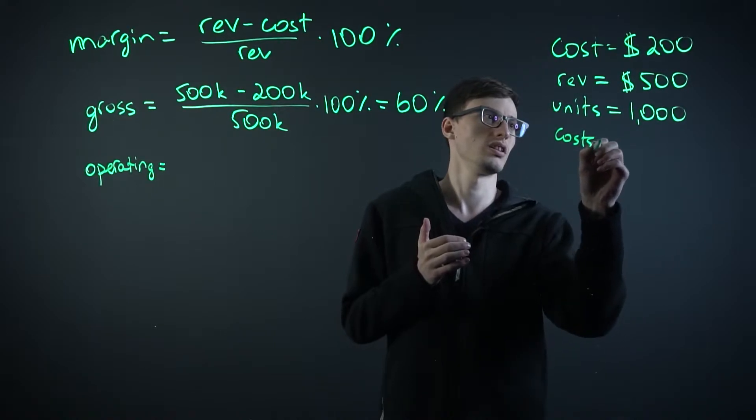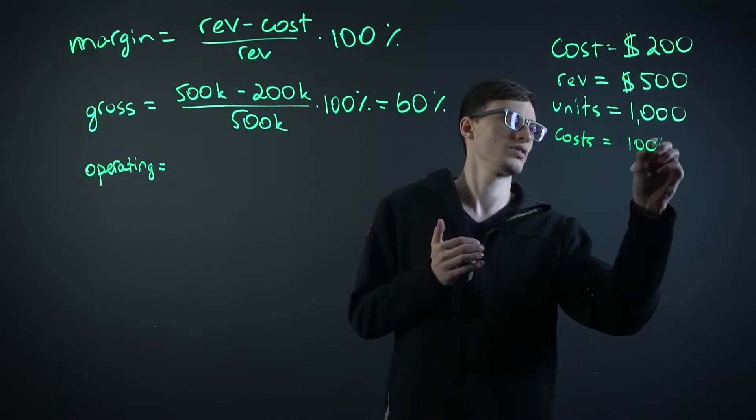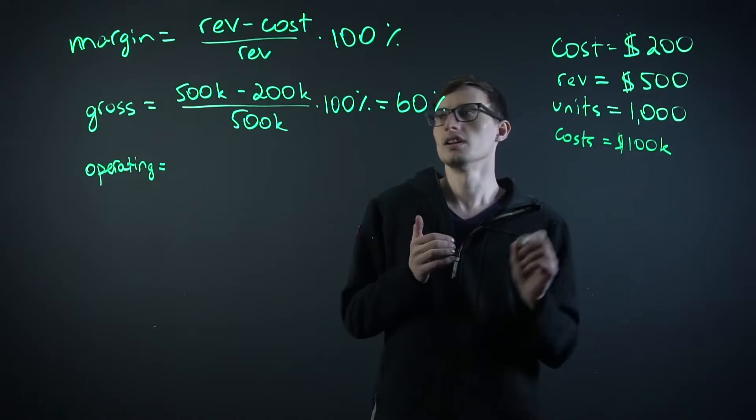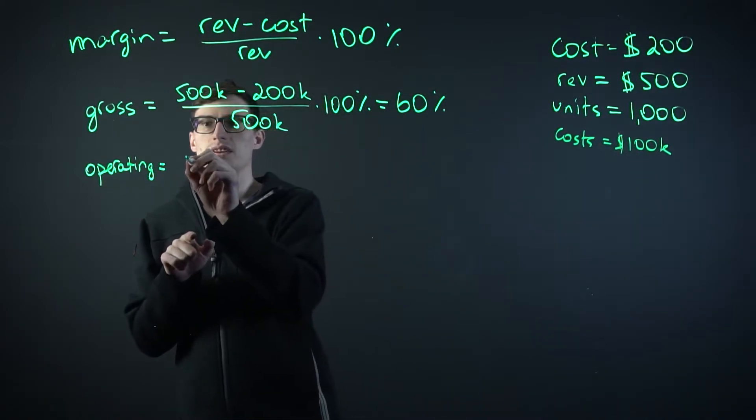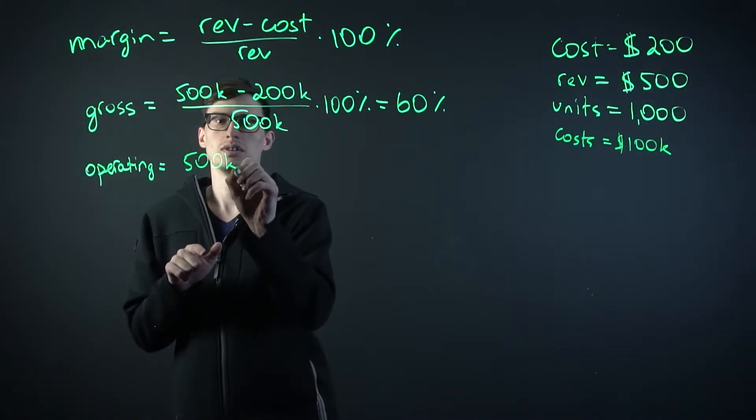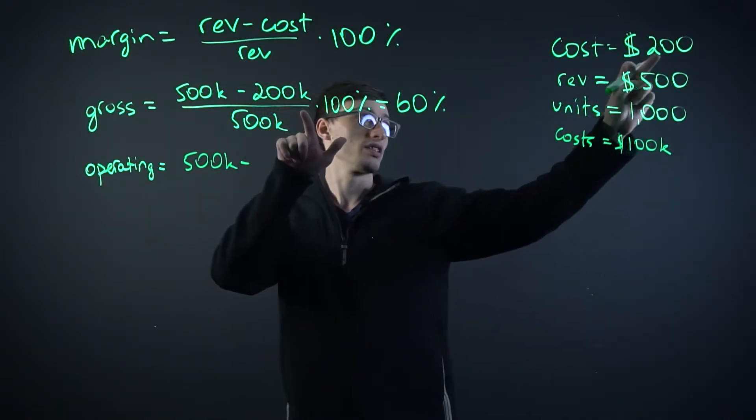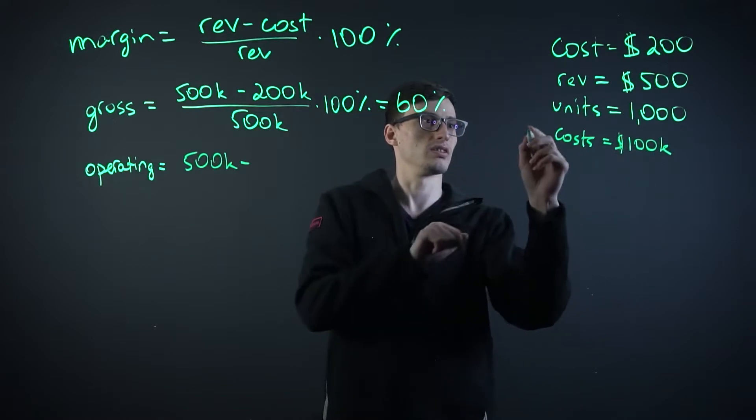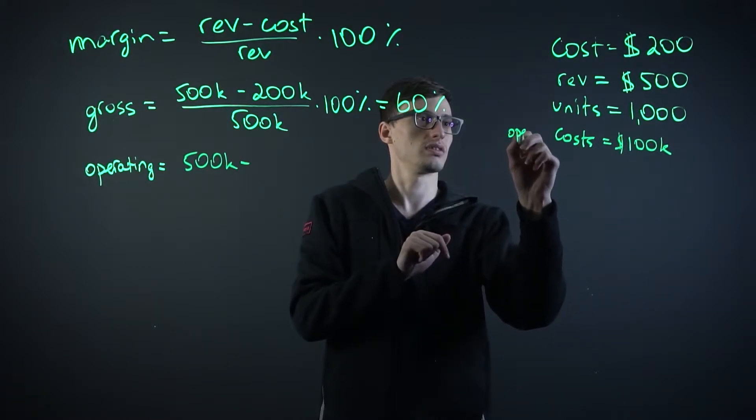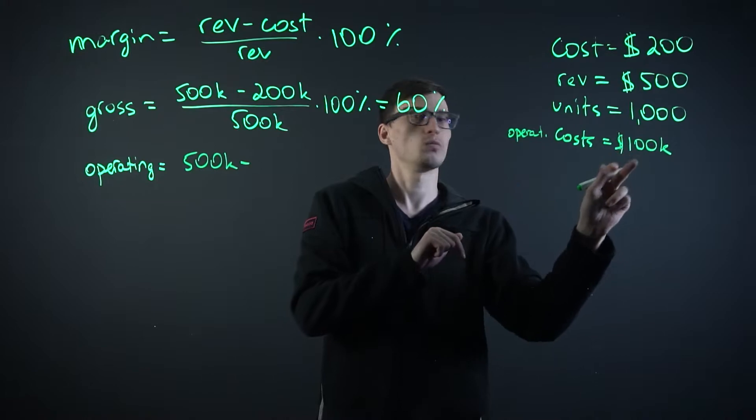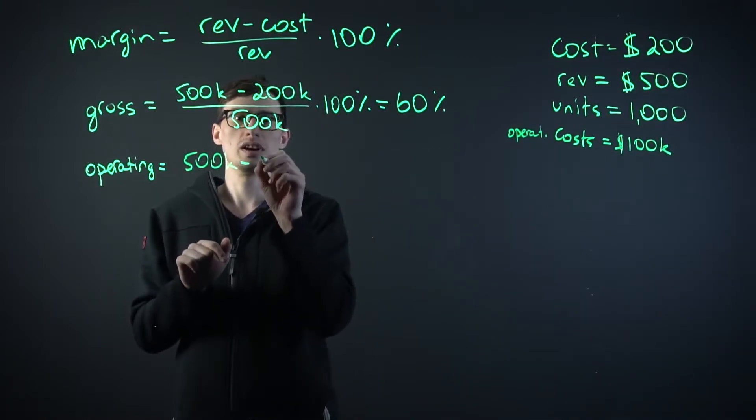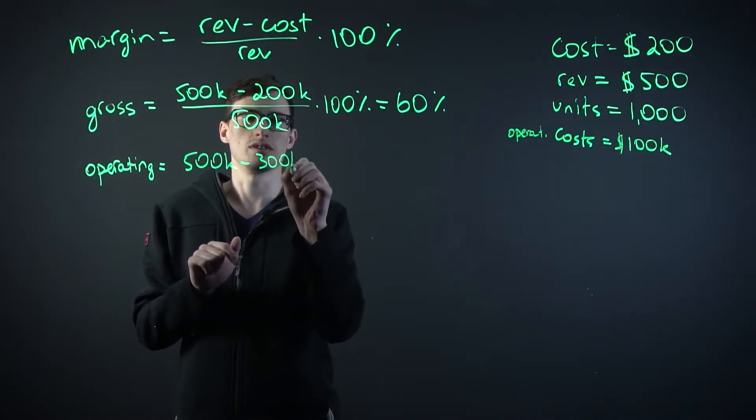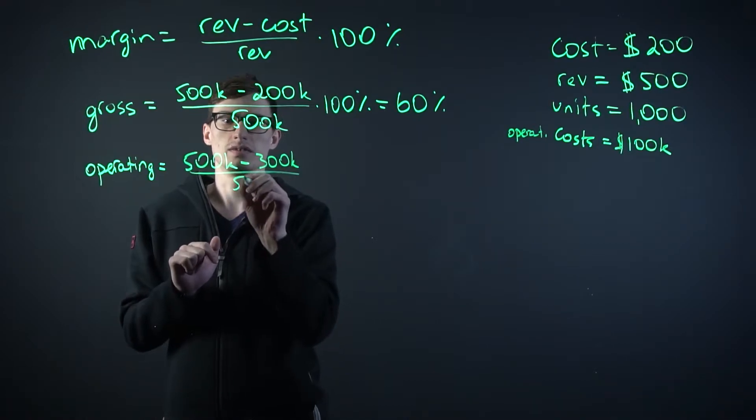So costs equal $100,000. So now we take $500,000, our revenue, minus we had the costs of $200,000 of the spending and the operating costs of $100,000. So now we do $500,000 minus $300,000 divided by $500,000.